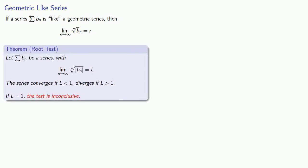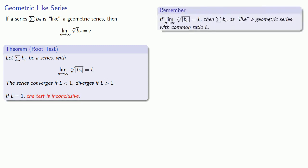Suppose we have a series where the limit as n goes to infinity of the n-th root of the absolute values of the terms is equal to l. The series converges if l is less than 1, diverges if l is greater than 1, and if l equals 1, the test is inconclusive. An easy way to remember the root test is that if the limit as n goes to infinity of the n-th roots of our terms equals l, then our series is like a geometric series with common ratio l.